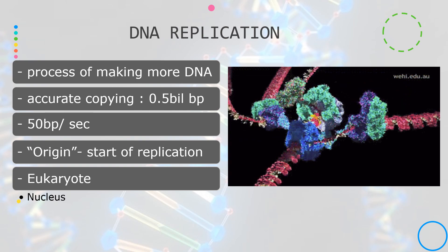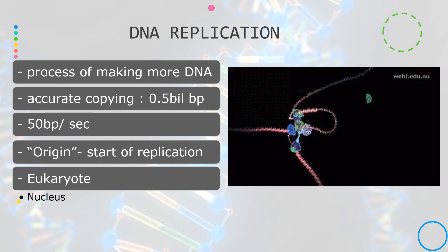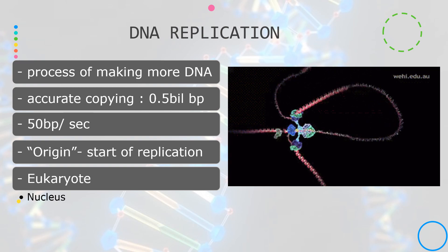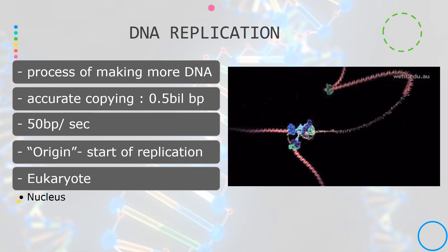DNA replication starts at the part called the origin, which is identified by certain DNA sequences. In eukaryotes, DNA replication occurs in the nucleus.